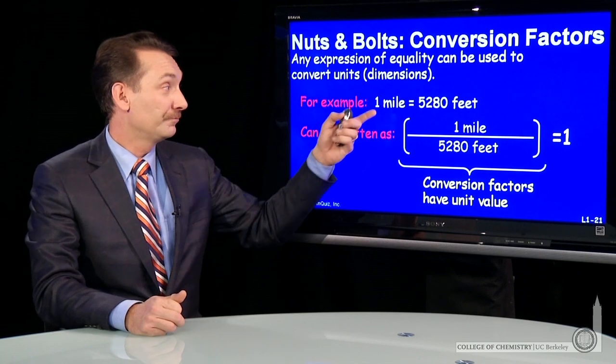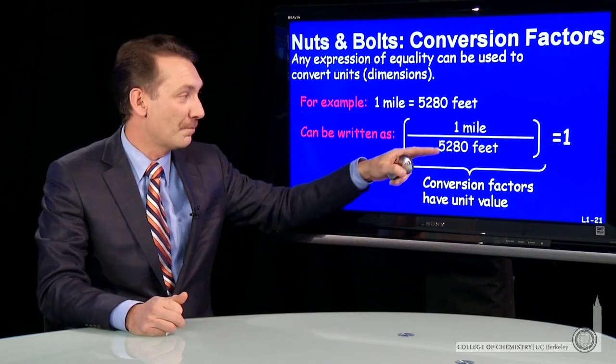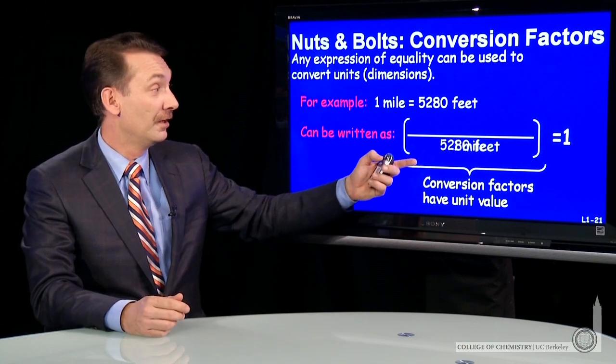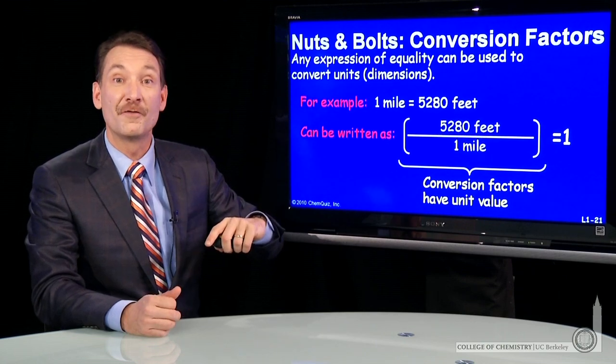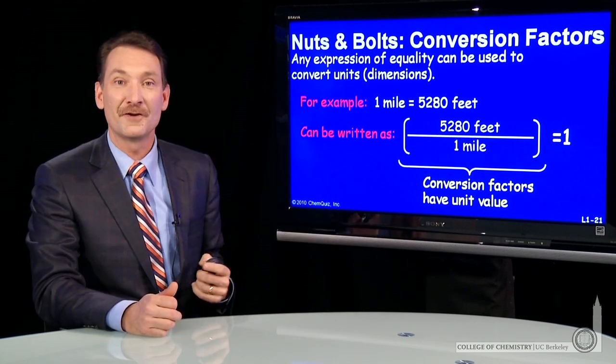So another example: 1 mile equals 5,280 feet. I can write that as 1 mile over 5,280 feet, or of course the reciprocal, 5,280 feet over a mile. Still unity, and I can use this as a conversion factor.